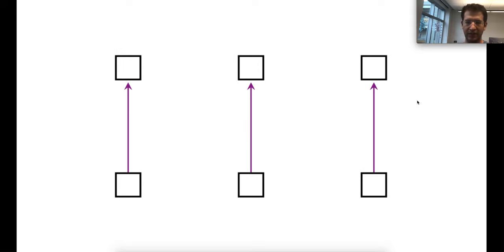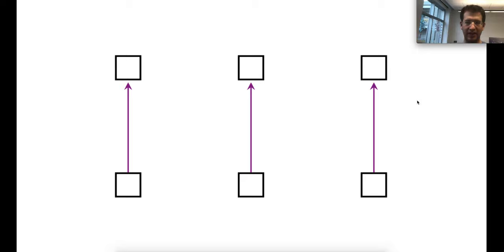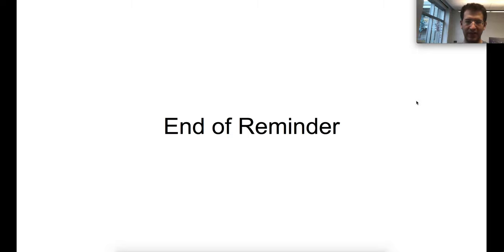The feedforward sublayer is very simple: the nth output is a function only of the nth input. Yeah, that's the end of the reminder.